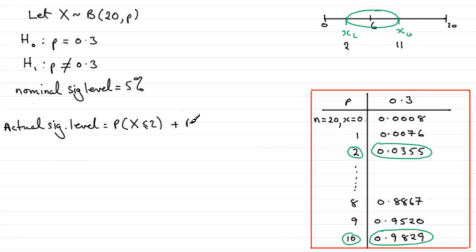plus the probability that X is greater than or equal to 11, assuming that H0 is true, that is we use P equals 0.3.